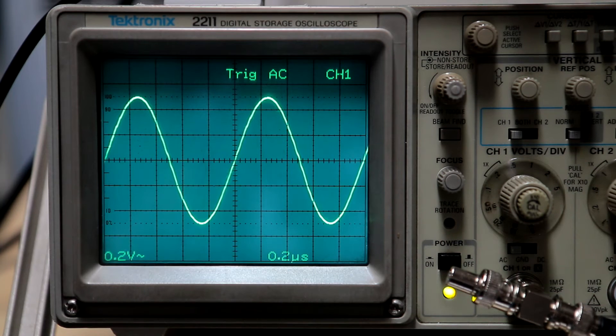Now feeding in a 1 megahertz signal. The vertical scale is still 200 millivolts per division and the horizontal is now at 200 nanoseconds per division. So we're going to have a look at the cursor now which you can use to make measurements.